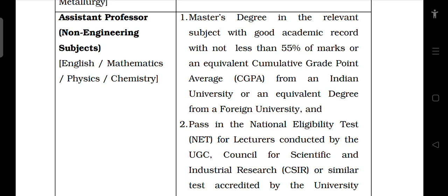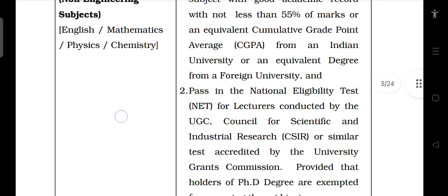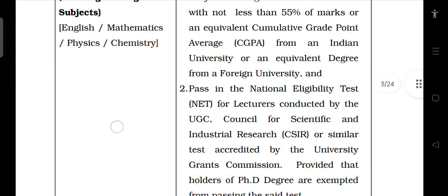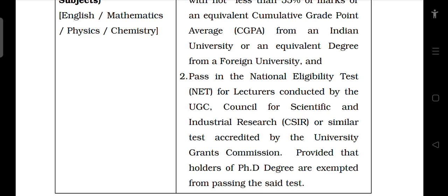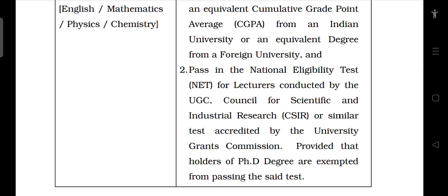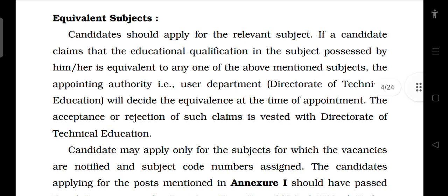You will need academic records — that is 55% equivalent to cumulative CGPA. You will need to qualify the National NET Test for Lecturers, or CSIR, or the University Grants Commission relevant tests. Similar to UGC, provided you have a PhD, you may be exempt from the test. The equivalent subjects also apply to the department's technical education requirements.